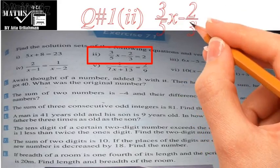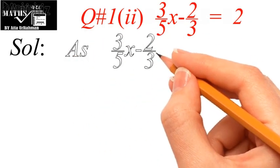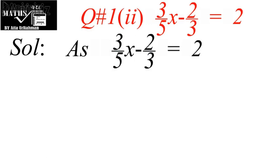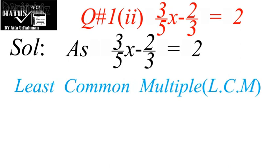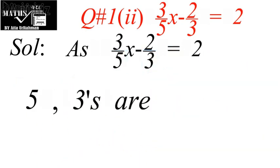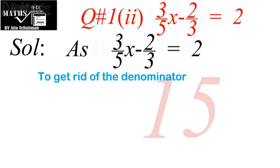Now look at the second problem: 3 upon 5 times x minus 2 upon 3 equal to 2. As you see there are fractions in this problem — there are values in the denominator. So our first duty is to clear the denominator. We will multiply this equation throughout by the LCM of the values involved, that is 5 and 3, whose LCM is 15. So we multiply this equation throughout by 15 to clear the denominator.